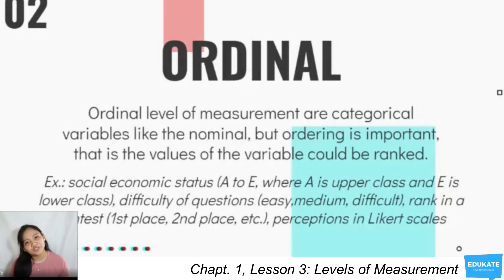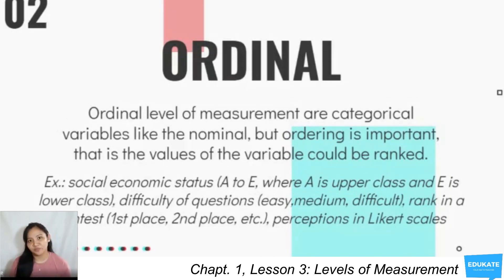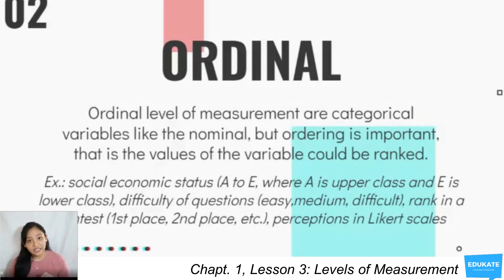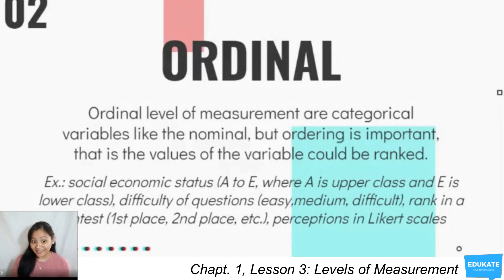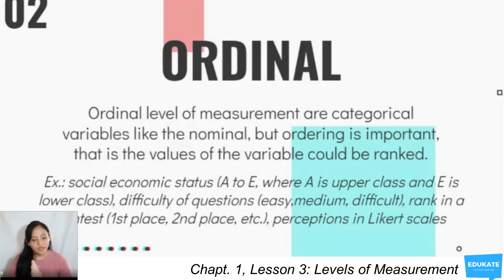The next level of measurement is ordinal. From the word ordinal, we tackle order. Ordinal level of measurement involves categorical variables like nominal; however, ordering is important — the values of the variable can be ranked. Examples include socioeconomic status from A to E, where A is the upper class and E is the lower class; difficulty of questions as easy, medium, or difficult; rank in a contest as first, second, or third place; and perception in Likert scales, such as from a scale of 1 to 10, how happy are you, with 10 being the happiest.